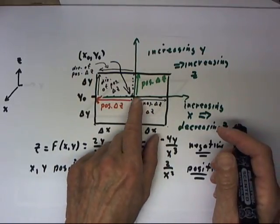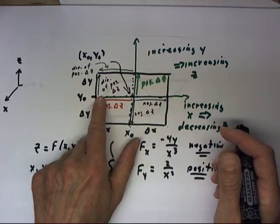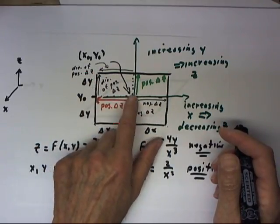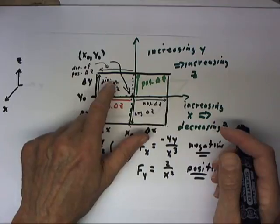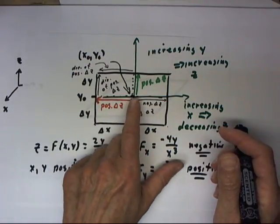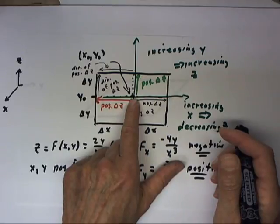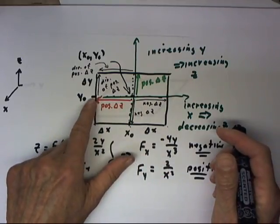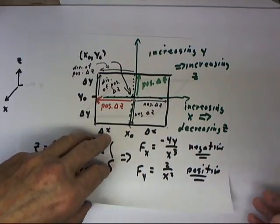We're going to consider the behavior of the z values corresponding to x, y values in this quadrant of this larger rectangle. The x-naught, y-naught point will be here. We'll move in the negative x direction. We'll move in the positive y direction.